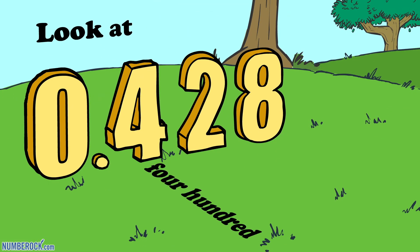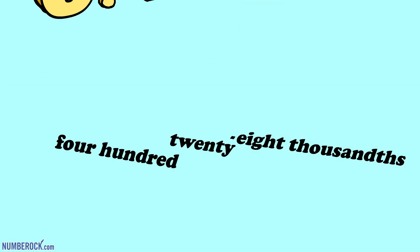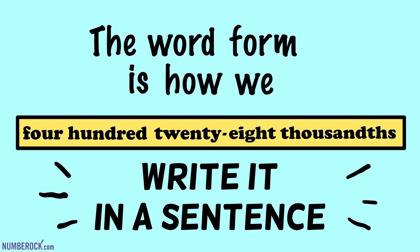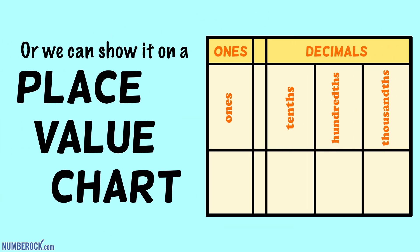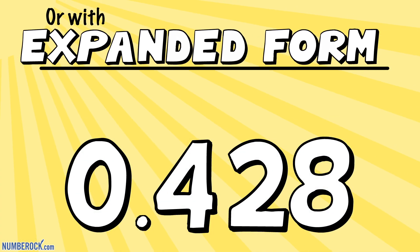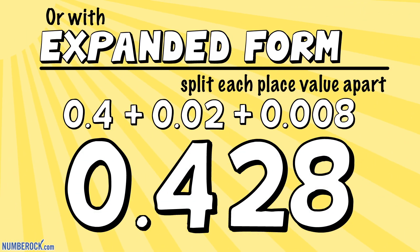Look at 0.428. The word form is how we write it in a sentence or we can show it on a place value chart. Or use expanded form to split each place value apart.